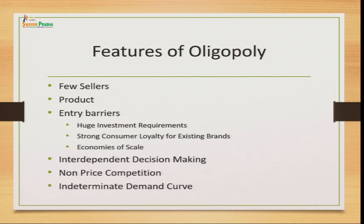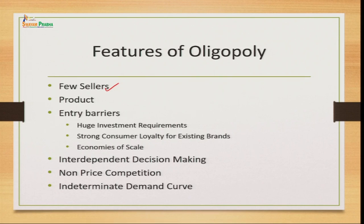Looking at the features of the oligopoly market: we have few sellers, not very large in number, and the type of product is important — either homogeneous or differentiated. There is an entry barrier. Though entry is not completely restricted, if you want to be part of this market there are barriers like huge investment requirements. This is a market structure where you need a lot of investment and large capital, which is not possible for everyone, so it does not allow many people to enter.